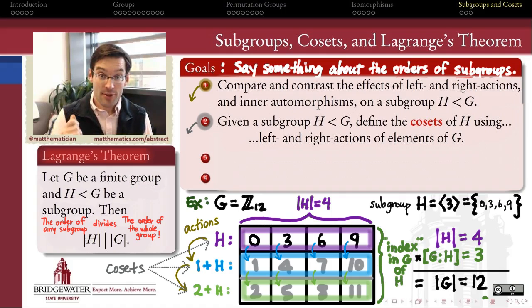What we claim is that these cosets are the key to understanding why Lagrange's theorem is true, that the order of any subgroup of a finite group is a divisor of the order of the whole group.